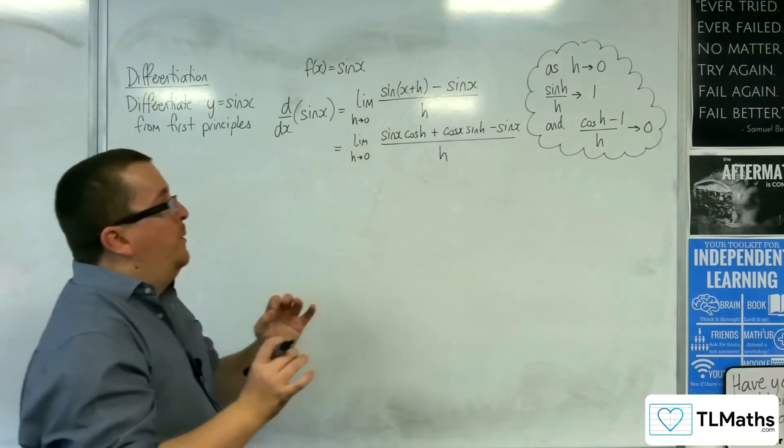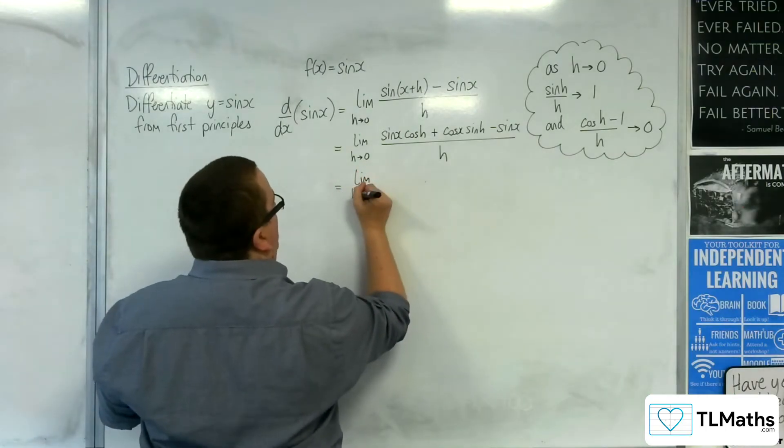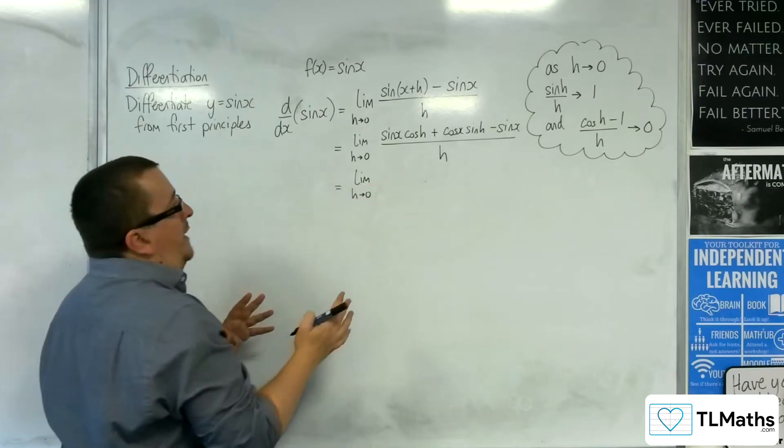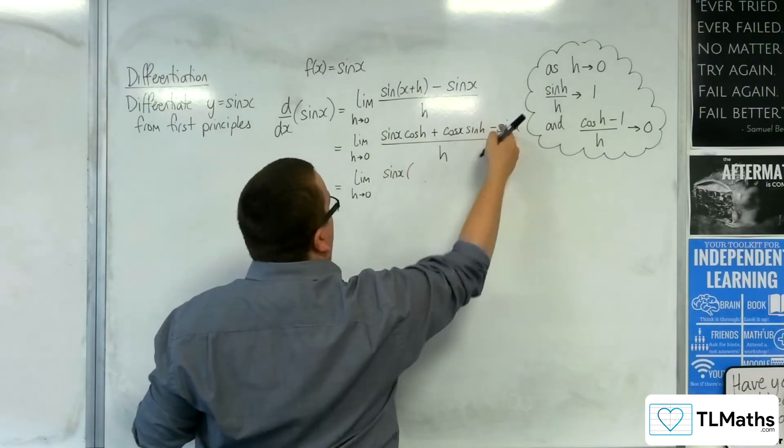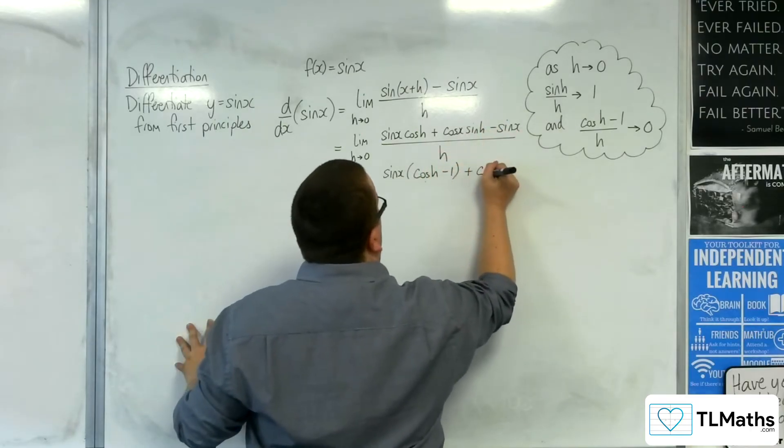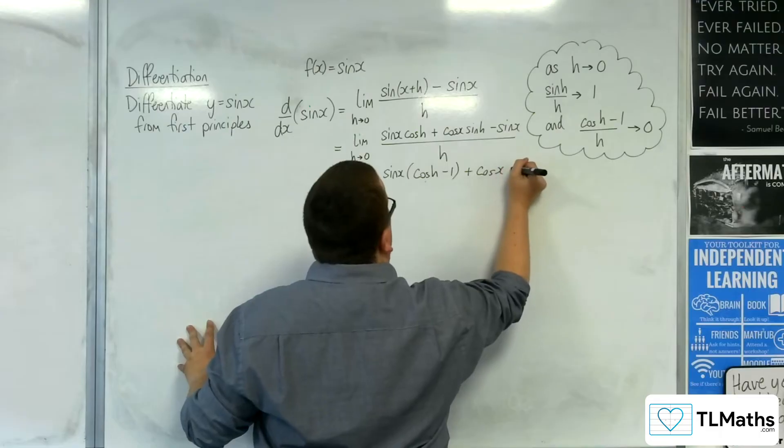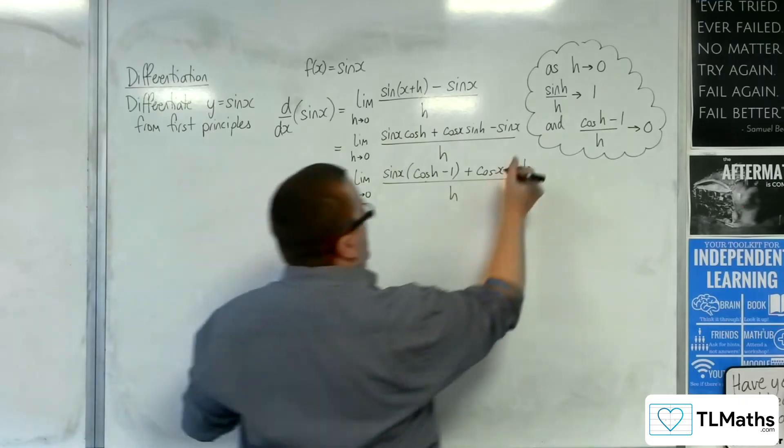At this point what we want to do is factorise the sine x's and the cosine x's. So we'll have sine x of cosine h take away 1 plus cosine x of sine h, or times sine h, all over h.